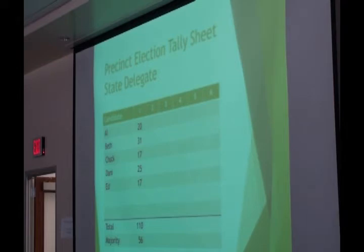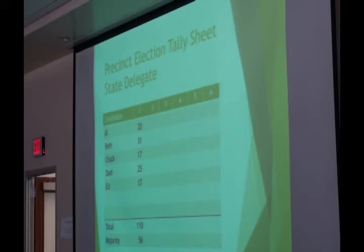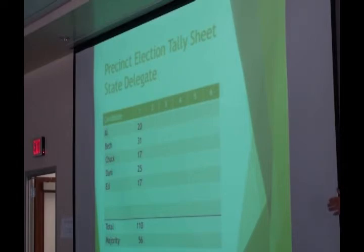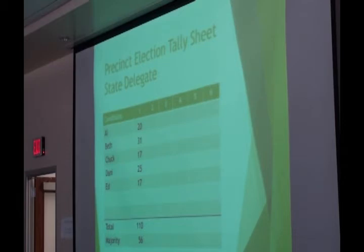In this case, nobody got 56 votes, so we have to eliminate the candidate with the lowest number of votes. Chuck and Ed both have the same number of votes — what do you do? You flip a coin. It's good practice to agree beforehand which of the two candidates calls it, and you call it in the air so there's no accusation of manipulation. Whatever you chose is the winner. In this case, Ed lost the coin toss.